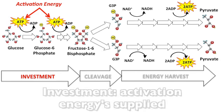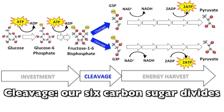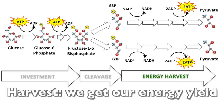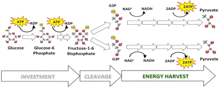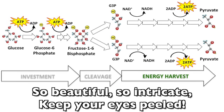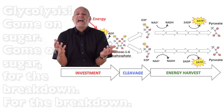Activation — energy supplied. Cleavage — our six-carbon sugar divides. Harvest — we get our energy yield. So beautiful, so intricate, keep your eyes peeled.